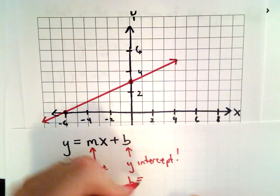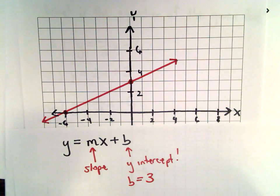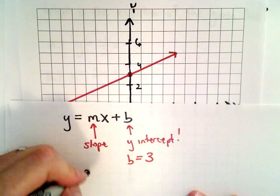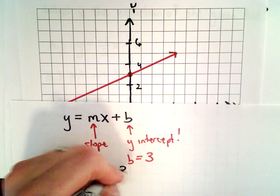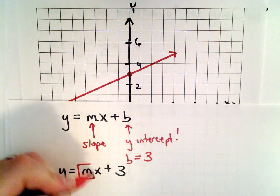So our y-intercept is going to be equal to 3. So our b-value, b represents the y-intercept, that's going to be 3. So already I know that my equation is going to look like y equals mx plus 3. So the only thing that I really have to figure out at this point is the slope.